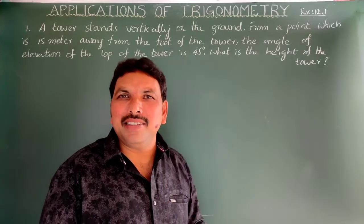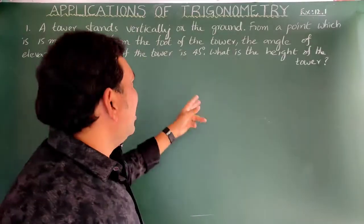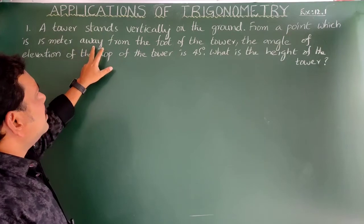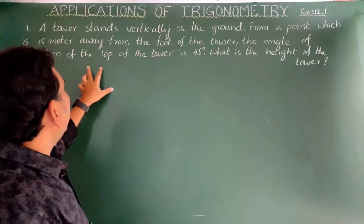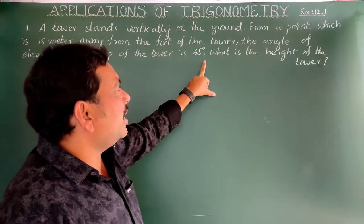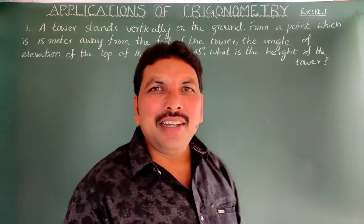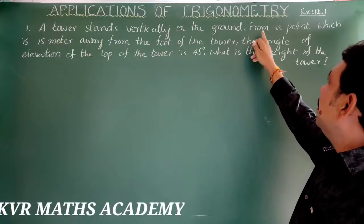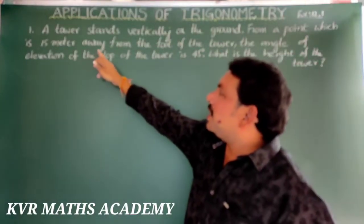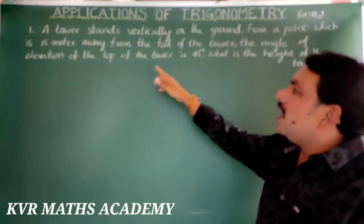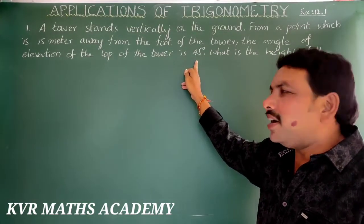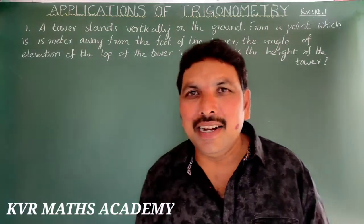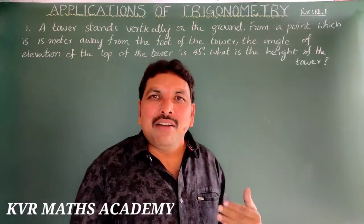First problem: A mast stands vertically on the ground. From a point which is 15 meters away from the foot of the tower, the angle of elevation of the top of the tower is 45 degrees. What is the height of the tower?